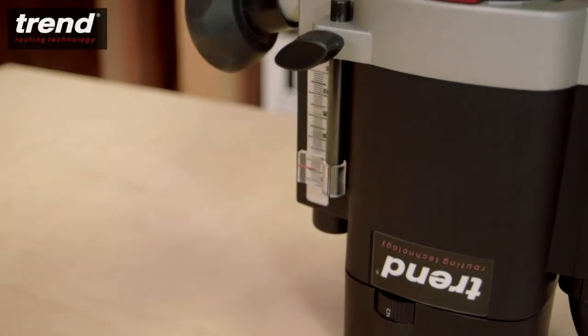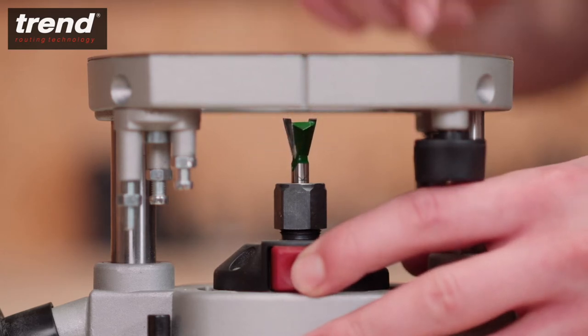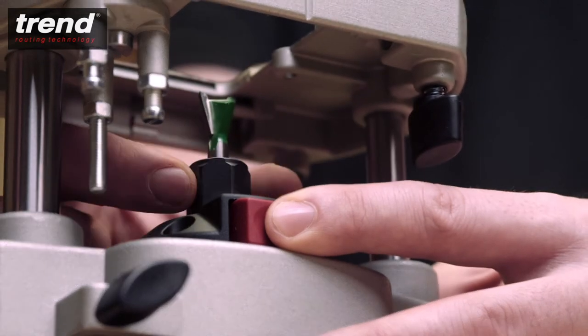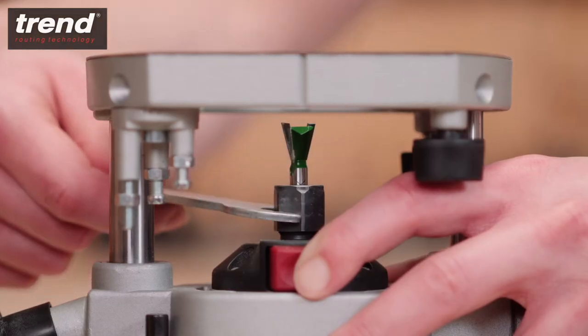First, insert a quarter inch shank router cutter into the collet. Make sure it's inserted up to the marked line. The spindle lock button stops the spindle from moving while tightening the collet nut with the spanner provided.